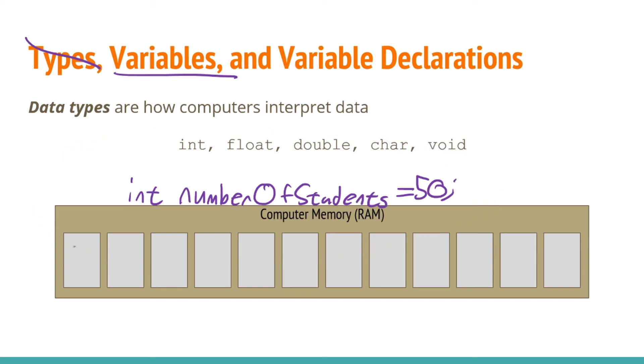Later on we will see that within the computer memory it will reserve a few of these boxes for the number 50. It will tell this number of students variable points to this set of boxes. This is an oversimplification of what is actually happening in the C memory model which we will learn at a later date.